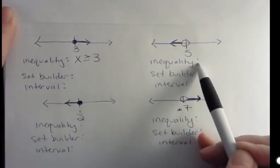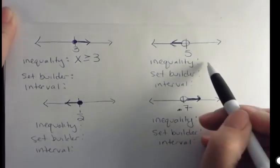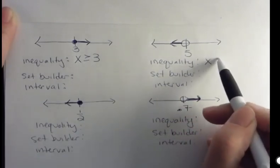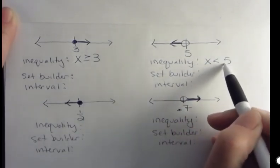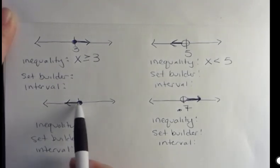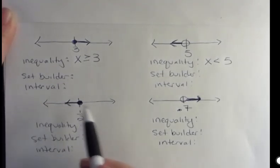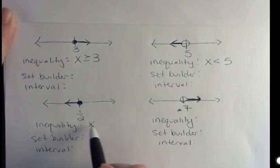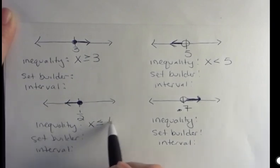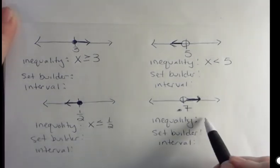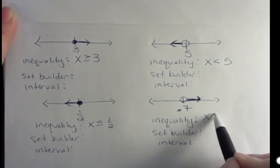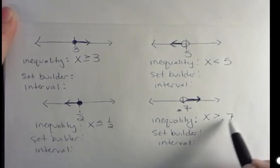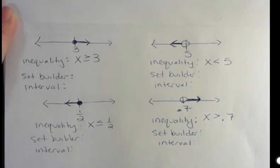What's the inequality for this one? We don't have a shaded circle, and it's less than 5 because it's going to the left, so x is less than 5. For this one, we're also talking about less than because it's going to the left, but we have a shaded circle, so x is less than or equal to one half. I'm going fast on these because I've already done a video on this. And then the inequality here is greater than, and it's got an open circle, so x is greater than 0.7. All of that should be something you already know.